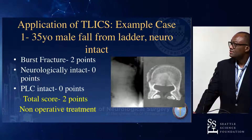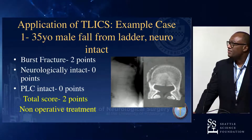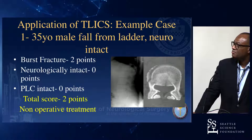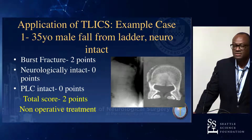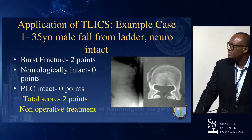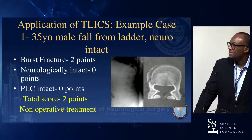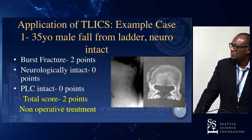Simple application: you have a 35-year-old male who fell from a ladder, neurologically intact, burst fracture — quite obvious, two points. He's neurointact, so zero points for neurology. PLC zero points, total score two points — non-operative treatment.